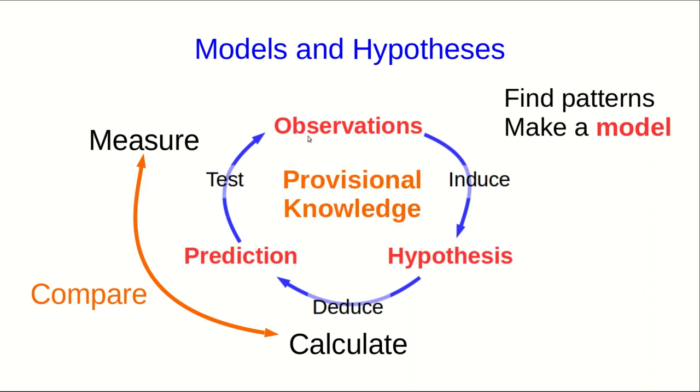This shows that our knowledge is provisional. It's always subject to being tested. If the model passes many tests, we may begin to call it a theory. A theory is a model that has been well tested and has passed the tests. Eventually, if we have a lot of confidence in it, and it makes a lot of different predictions, we may call it a law.